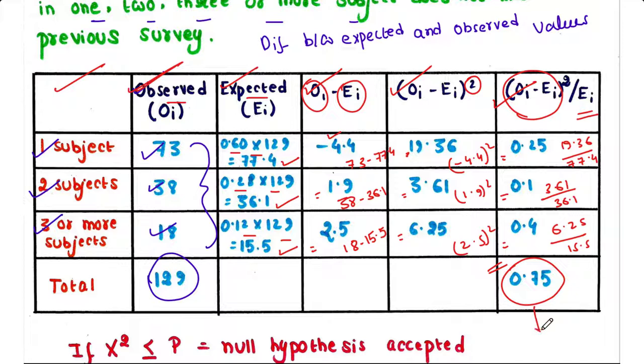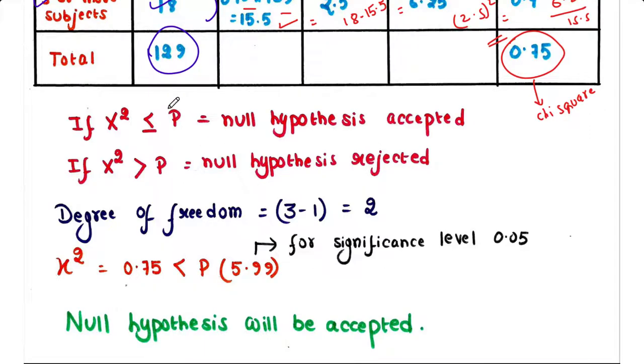Next, the P value or the probability value will tell us how to conclude. If χ² is less than or equal to the P value, the null hypothesis should be accepted. If χ² is more than P value, the null hypothesis should be rejected.